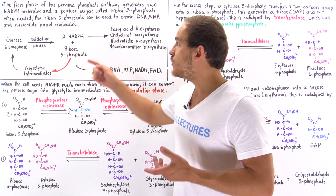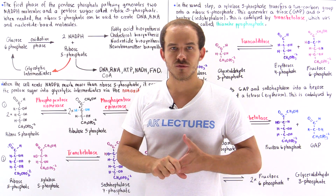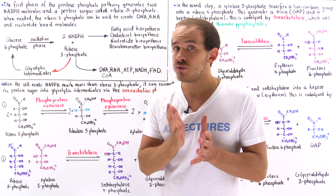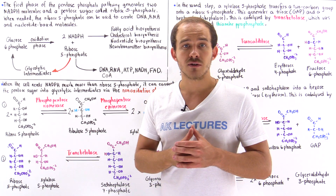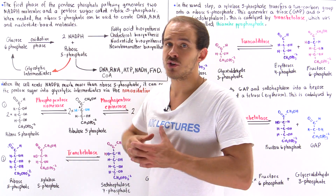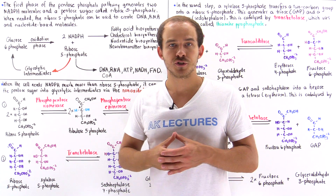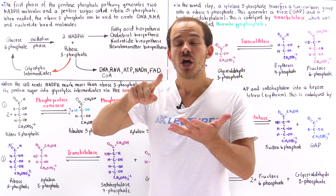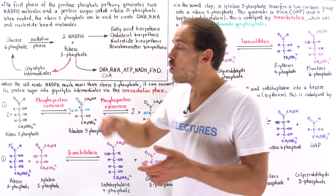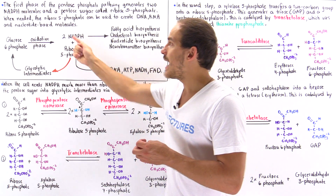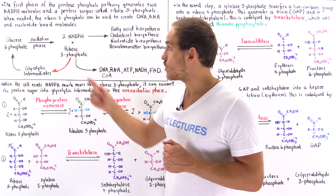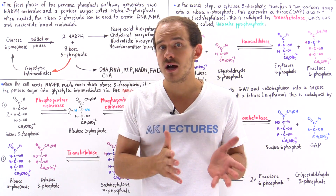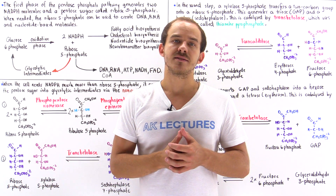The NADPH molecules are very important reducing agents inside our cells. Cells use these molecules to help generate many other biological molecules, such as fatty acids, cholesterol, nucleotides, and neurotransmitters. In addition, cells also use NADPH to help detoxify many different types of toxic agents that exist inside our cells.